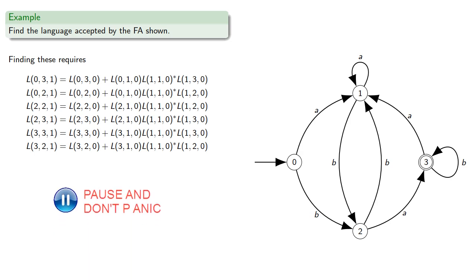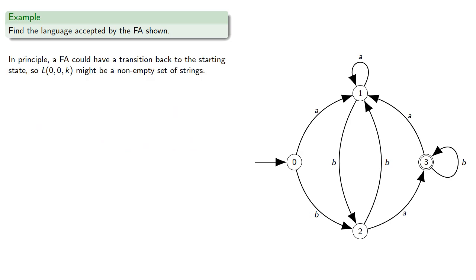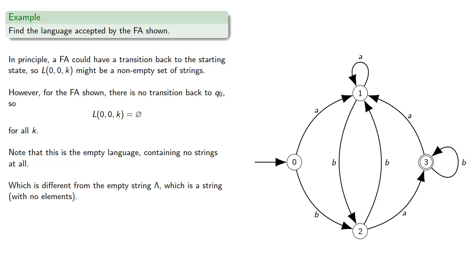And finding these requires... So we have a bunch of l(p,q,0)s to find. In principle, a finite automaton could have a transition back to the starting point, so l(0,2,0), passing through states labeled k or less, might be a non-empty set of strings. However, for the finite automaton shown, there is no transition back to our starting state, and so l(0,0,k) is always the empty set for all k. Note that this is the empty language containing no strings at all, which is different from the empty string lambda, which is a string with no elements. And this is also different from the language containing only the empty string. This distinction is important to keep in mind.